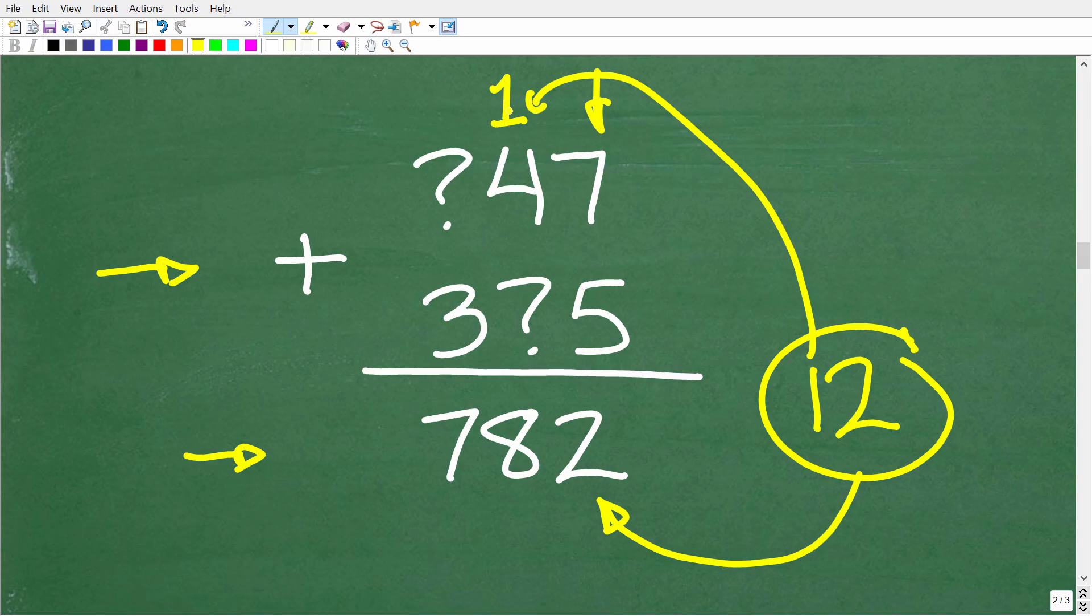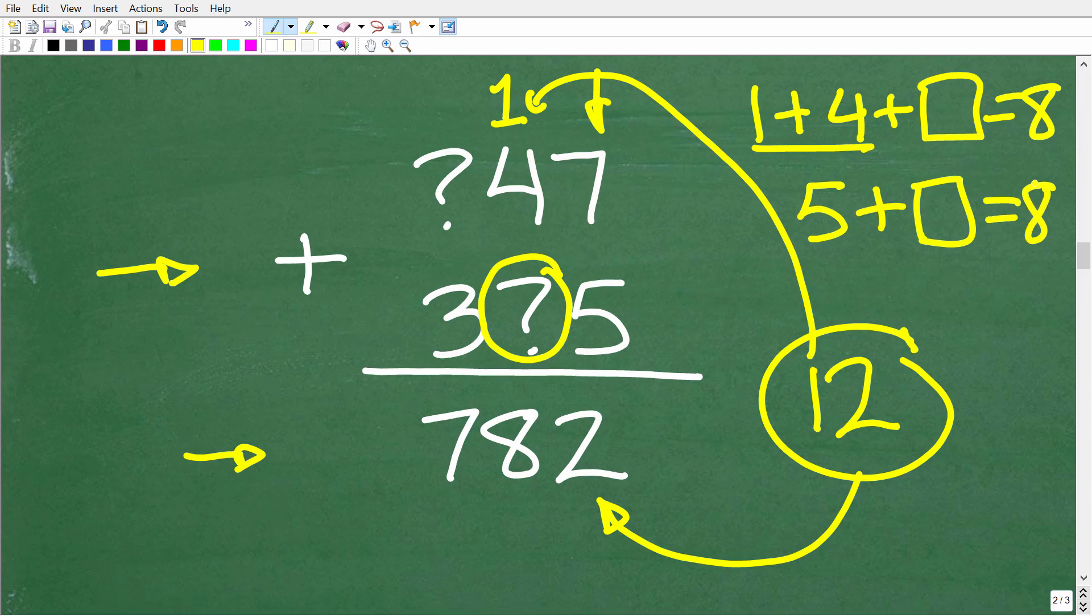So now we have 1 plus 4 plus something. And the answer is 8. So we have 1 plus 4 plus something. And the answer is 8. Now, you could use some algebra here to figure this out. But we know that our answer here, our digit, has to be an integer value, a nice whole number value. So it can't be some sort of fraction. So 1 plus 4 is what? Well, that's 5. So 5 plus something is equal to 8. Well, hopefully you can see the answer here is going to be 3. So this digit right here must be 3.